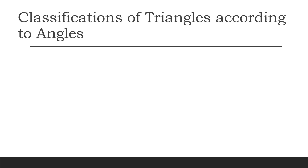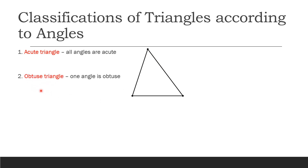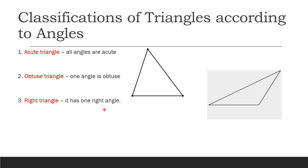Classifications of triangles according to angles: First, we have the acute triangle — all angles are acute. This is an example of an acute triangle. Next, the right triangle — it has one right angle. This is an example of a right triangle.